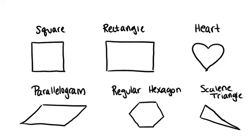Next we're going to look at these six shapes and think about whether each of them has reflection symmetry or not and if so how many lines of symmetry they have.